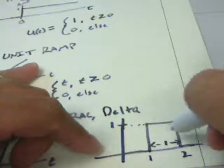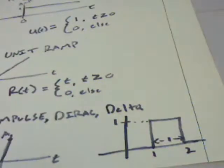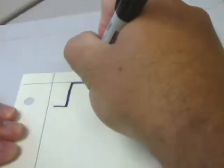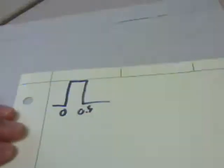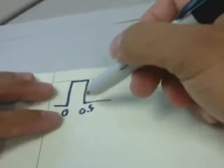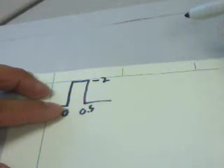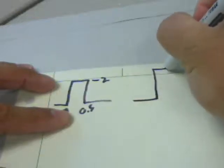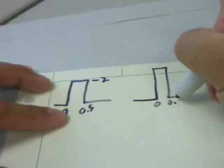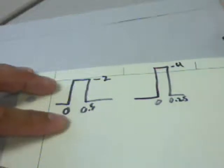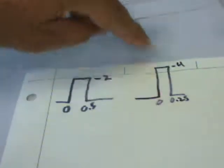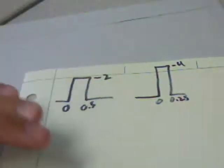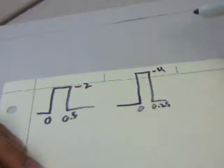So we now have a width from 0 to 0.5 and the height of two—the area under the curve is still just one. We can do the same thing. We can make it a quarter, 0 to 0.25, and the amplitude 4, and the area under the curve is still one. As you get narrower and narrower, this has to go higher and higher, until in the limit the width of this function is zero and the height of it is infinite, and the area under the curve stays at one.